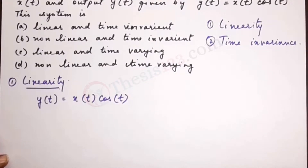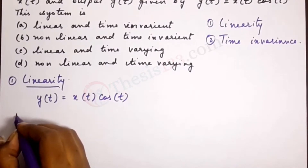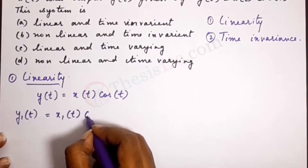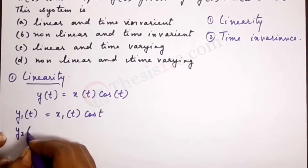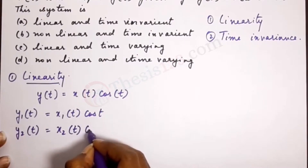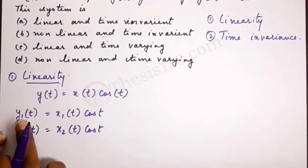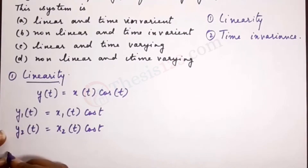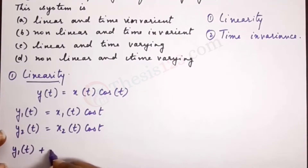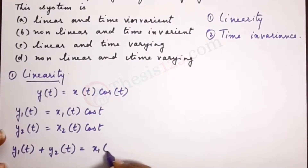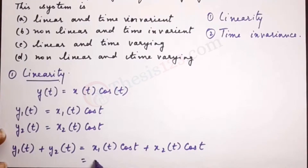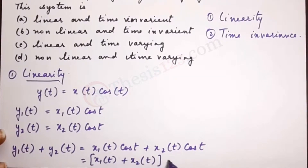In order to see if this equation is additive, let's take two conditions. Let y1(t) = x1(t)·cos(t) and y2(t) = x2(t)·cos(t), where x1(t) corresponds to y1(t) and x2(t) corresponds to y2(t). Now if we add both of these, y1(t) + y2(t) = x1(t)·cos(t) + x2(t)·cos(t). We can factor out cos(t) to get [x1(t) + x2(t)]·cos(t).